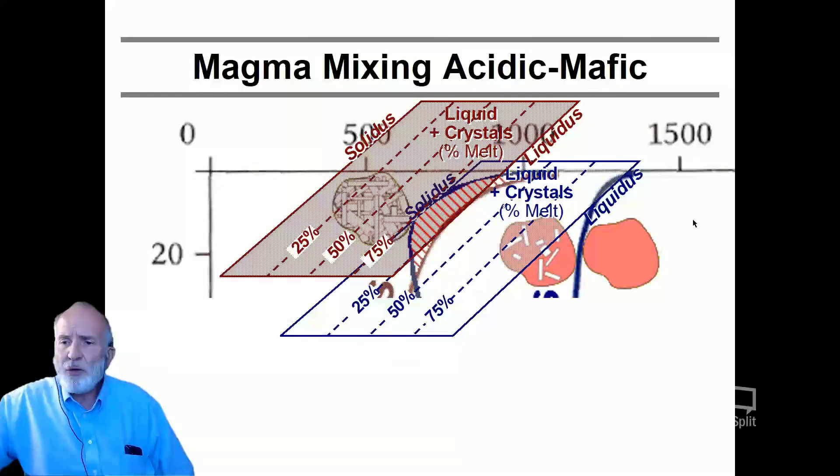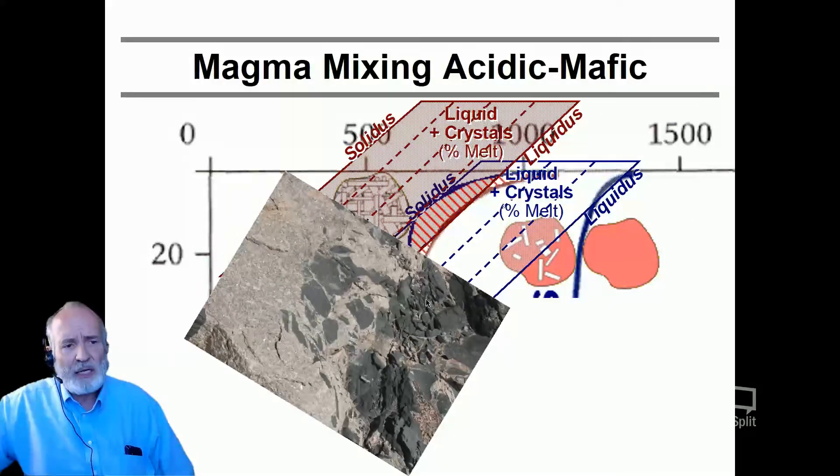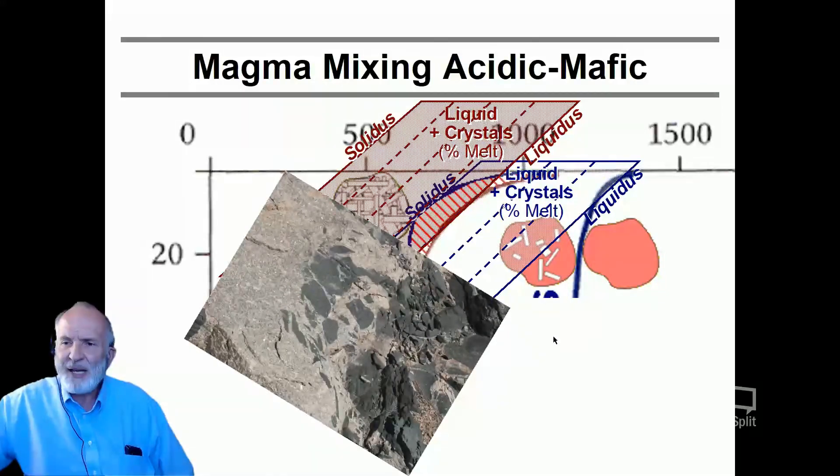If we look at this closer, then we can now understand how we get these fantastic patterns at the Ring Dyke at Virginia Dale. The acidic material here is fully molten, while the more mafic material has already solidified, and we generate these interesting mixing patterns.